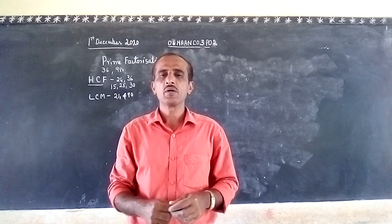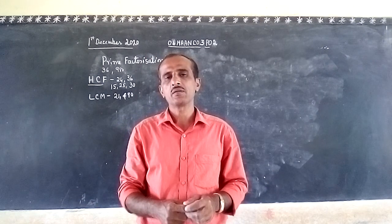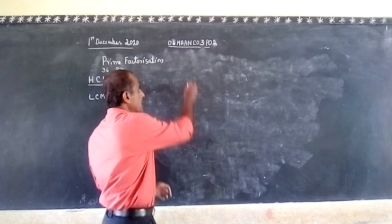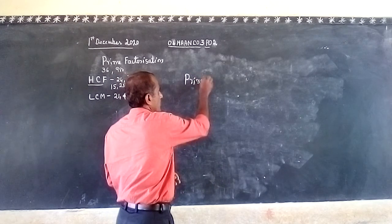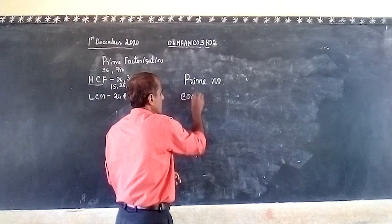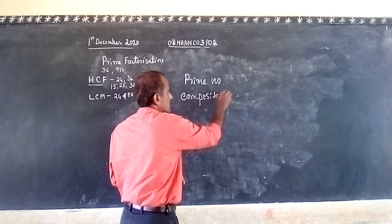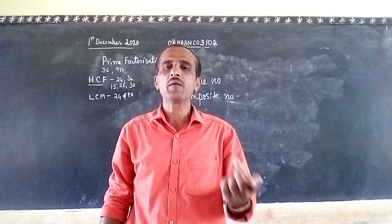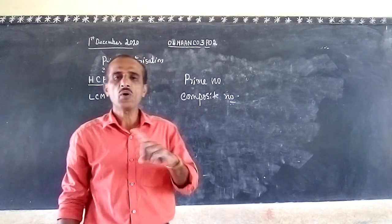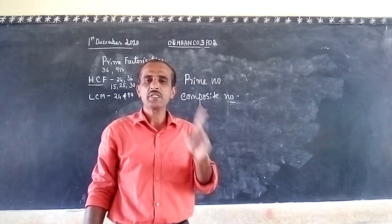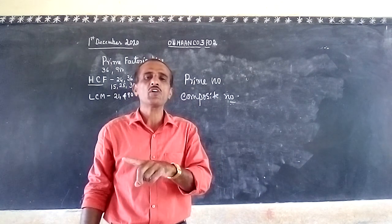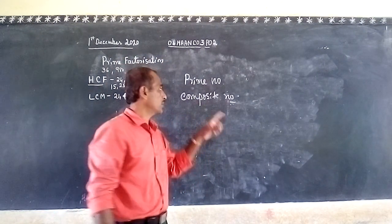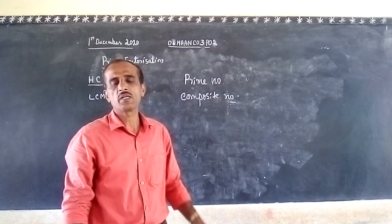We will also see highest common factor and least common multiple. Before that, we studied about prime numbers and composite numbers. A prime number is a number which is divisible by one and that number itself only — no other factors. A number which has factors other than one and itself is called a composite number.